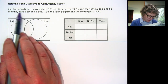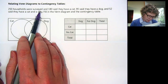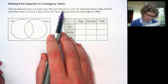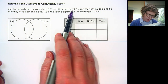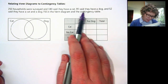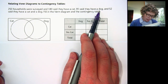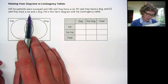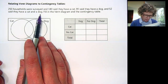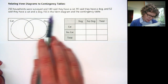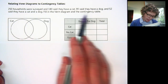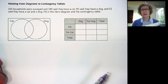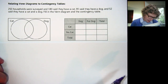250 households were surveyed and 180 said they have a cat, 95 said they have a dog, and 52 said they have a cat and a dog. Fill in the Venn diagram and the contingency table. So let's do the Venn diagram first.